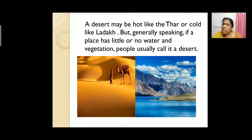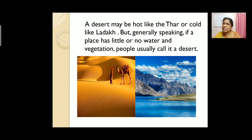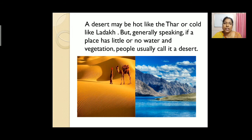A desert may be hot like the Thar, which is in Rajasthan, or cold like Ladakh, which is in Jammu and Kashmir. But generally speaking, if a place has little or no water and vegetation, people usually call it a desert.